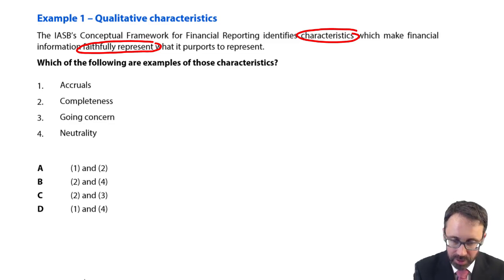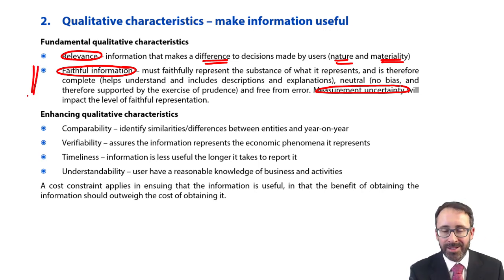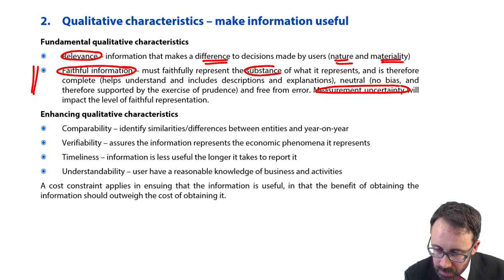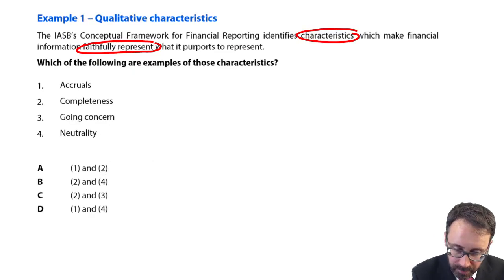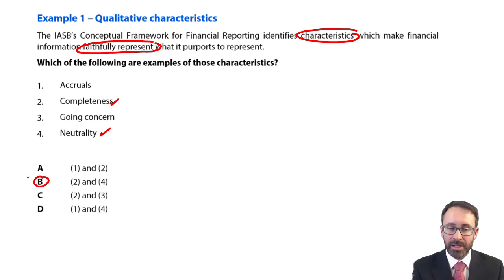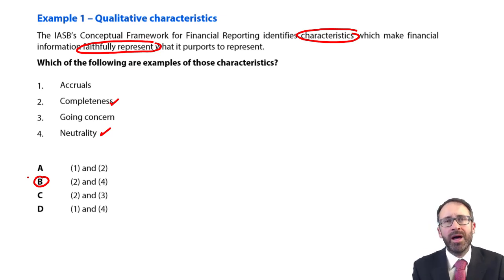Going back into our notes, we're looking at faithful representation. An asset or liability is faithfully represented if it looks at the substance — so therefore it is complete, neutral, and free from error. So here: complete, neutral — options two and four — so that gives us answer B. It's worthwhile practising not just these questions but also the questions within your revision kit and study text to build up that knowledge.